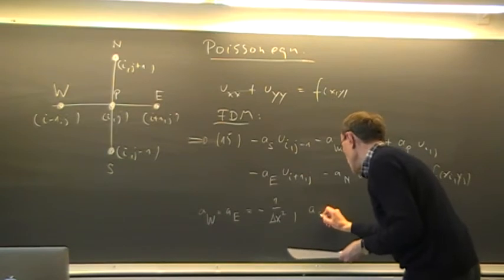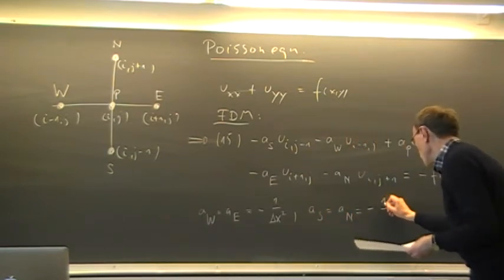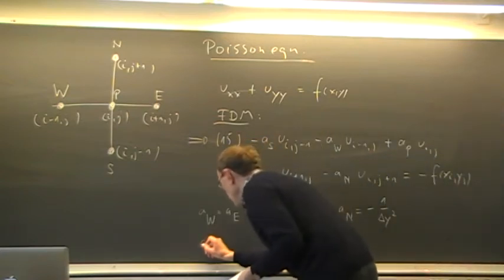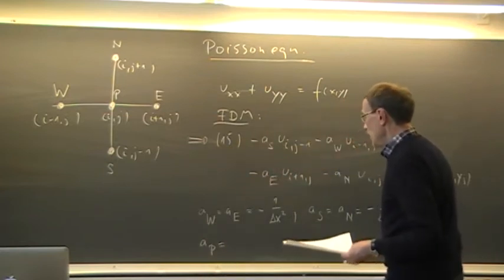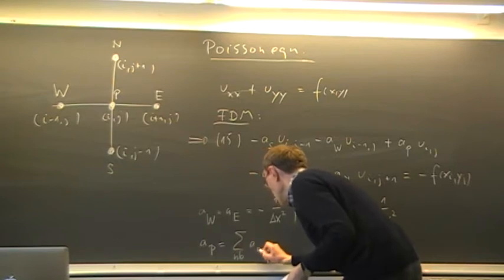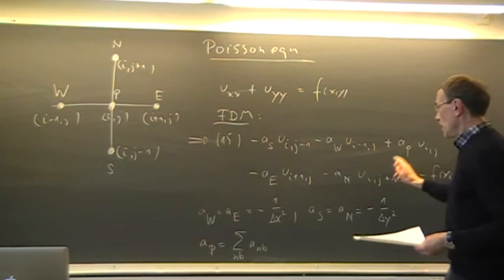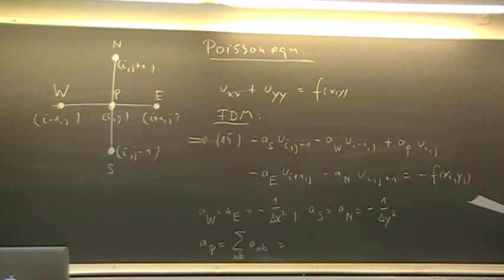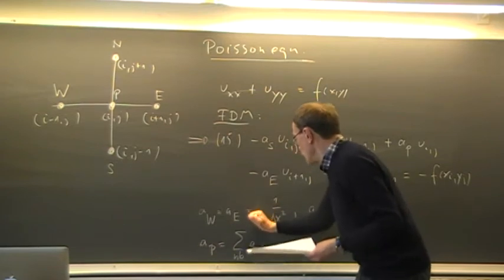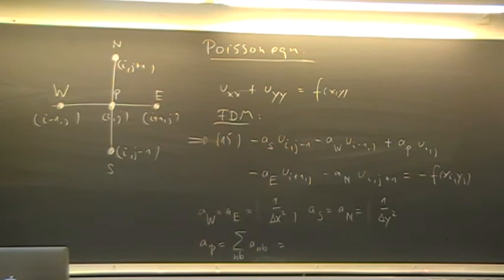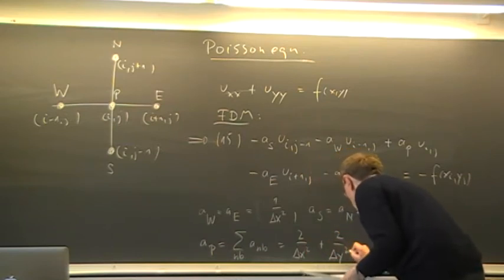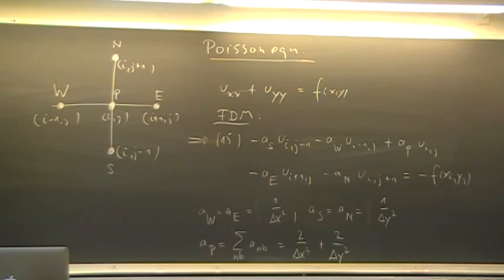The A south is equal to the A north, which is minus 1 over delta Y squared, so we may have different grid spacings in X and Y direction. Using this notation we get for the center coefficient that it is actually the sum of the neighbor coefficients AS, AW, AE and AN, and that turns out to be — sorry for a correction — it is plus 1 over delta X squared plus 1 over delta Y squared, so the sum is 2 over delta X squared plus 2 over delta Y squared. This is a general form we can also use for other equations.